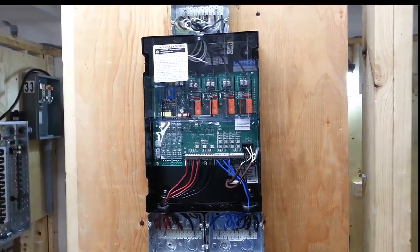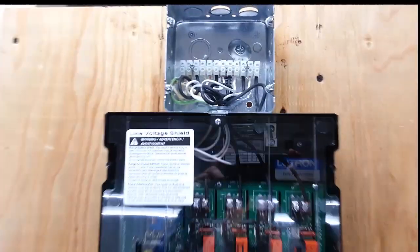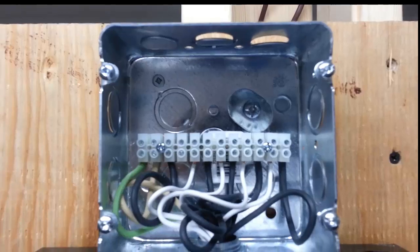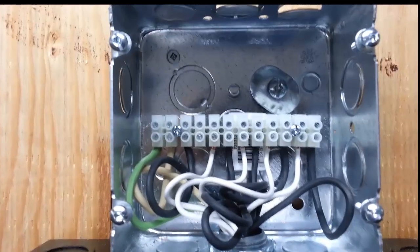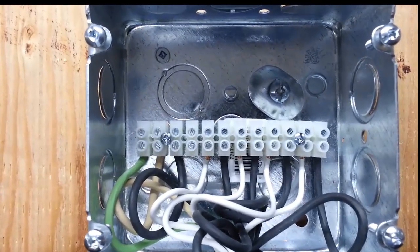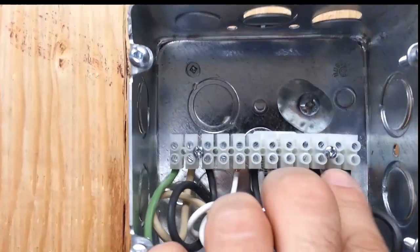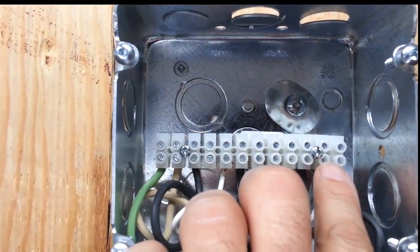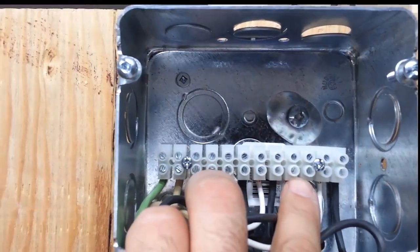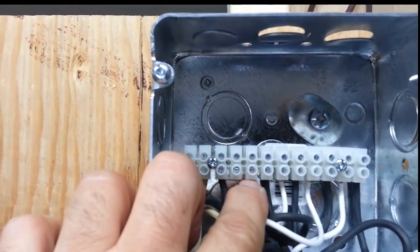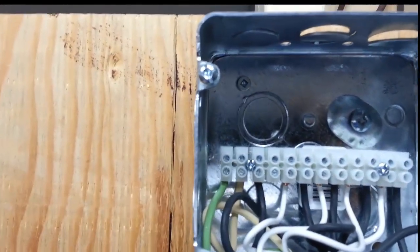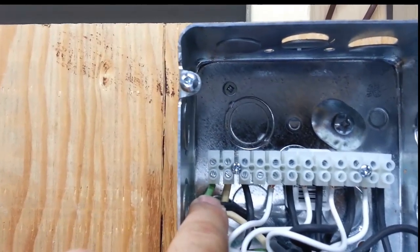The actual 120 volt connections will happen in this box up here. You see it has black and white wires. So you have your neutral and your hot. And you have basically four lines or four loads that this unit can handle. So there's one load here. Another load here on the black and white. Third load on the other black and white. And the fourth load on the other black and white. The black and white on the far left is the actual feed that goes into the panel that feeds the unit.